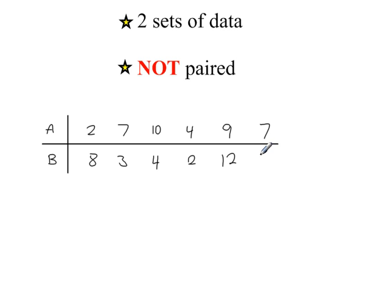You can also get data where the number of values for both of your sets of data is exactly the same. And then you might wonder, are these paired data values?